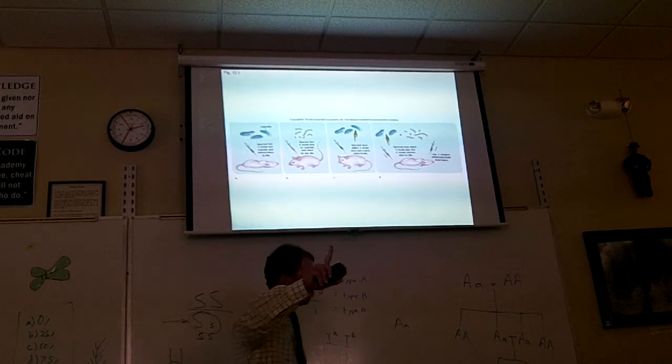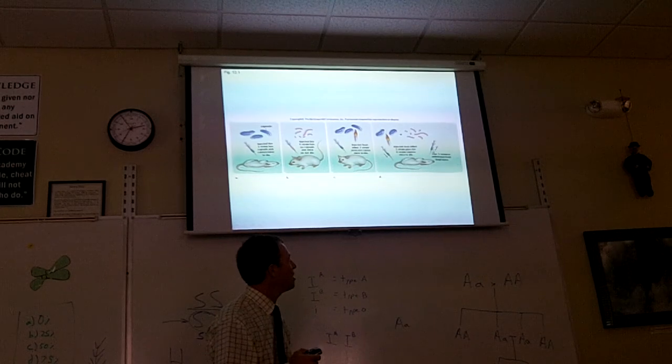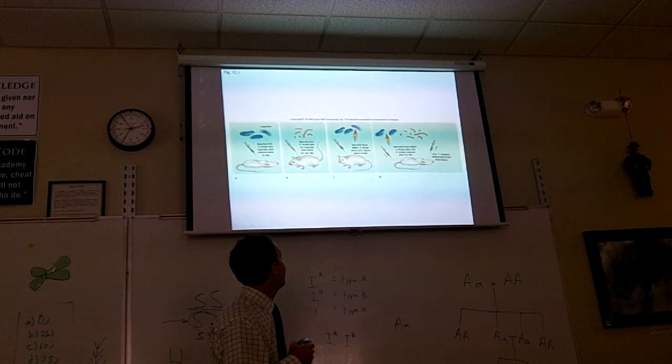So these bacteria by themselves didn't kill the mouse and heat-killed S-strain didn't kill the mouse, but if you put the two together in the syringe and inject them both, the mouse dies. Furthermore, he took blood out of the dead mice and looked at the blood and he found live S-strain. Whoa!